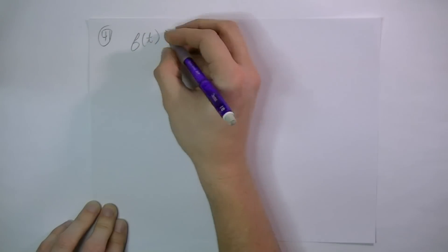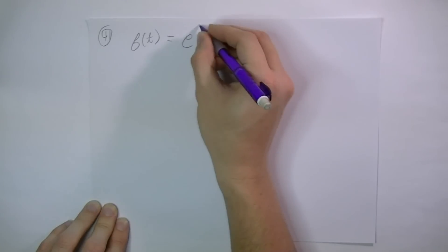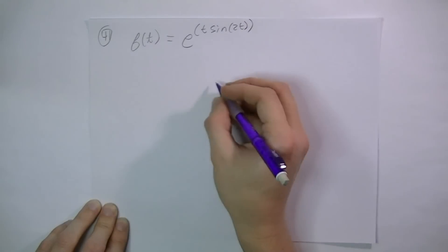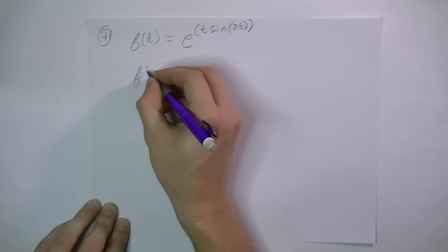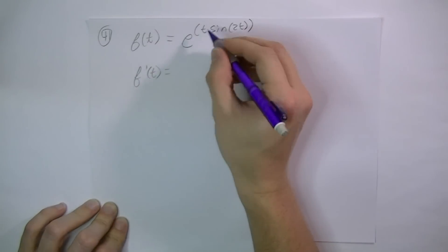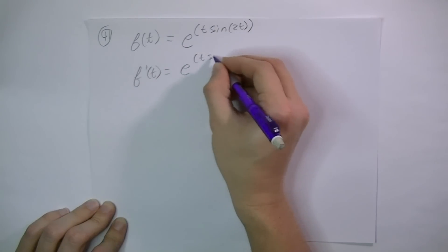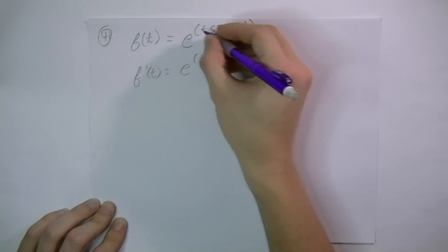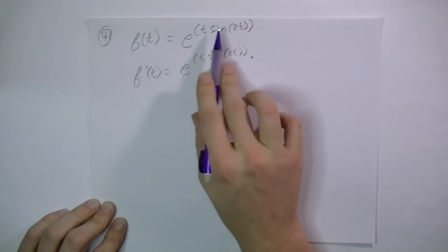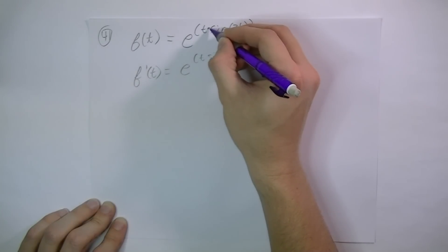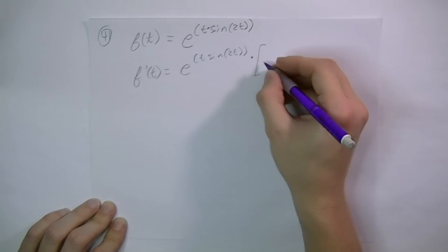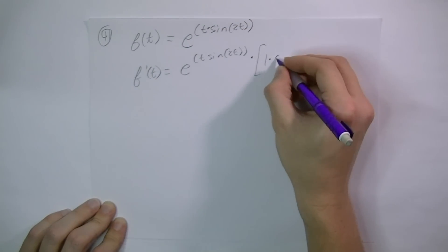Number 41. F of t equals e to the t sine 2t power. So f prime of t equals — we'll have to do the chain rule. This part stays the same, and then we multiply by the derivative of the inside. The inside is a product — it's t times sine of 2t — so we'll have to use the product rule. The derivative of the first, t, will be 1, and then sine 2t stays the same.